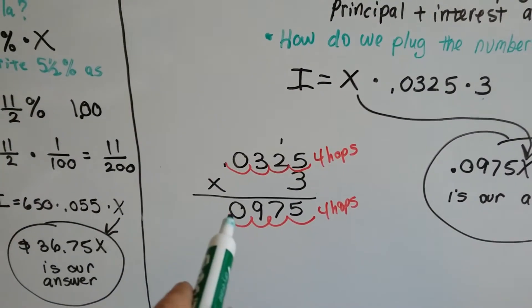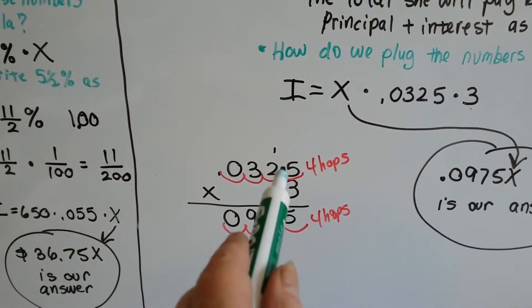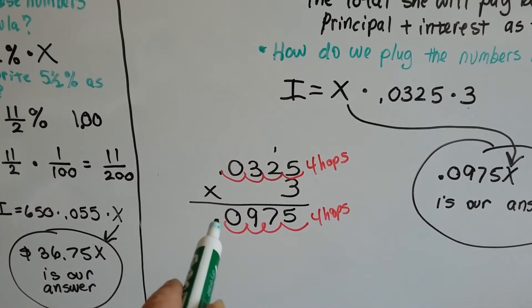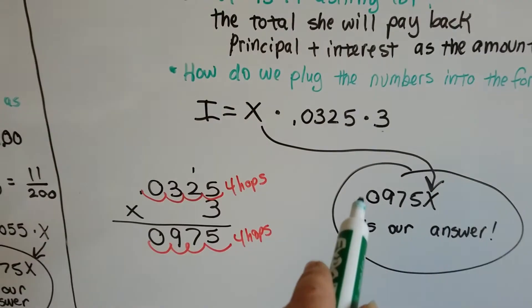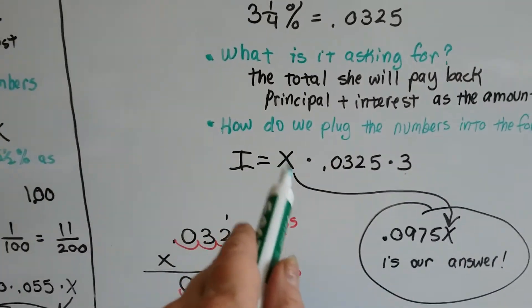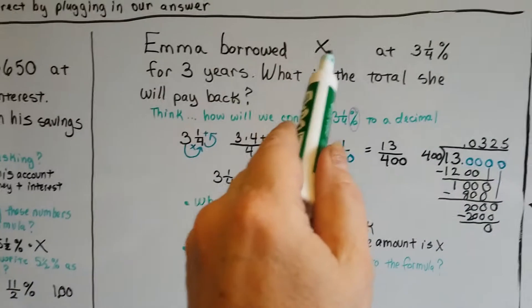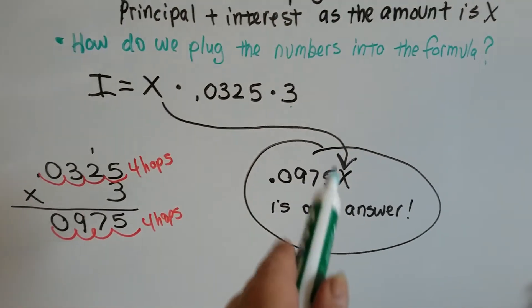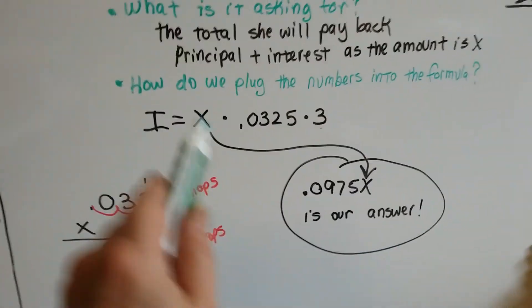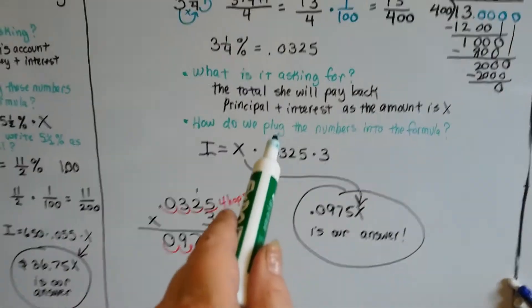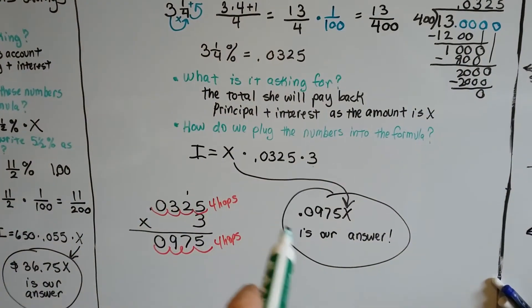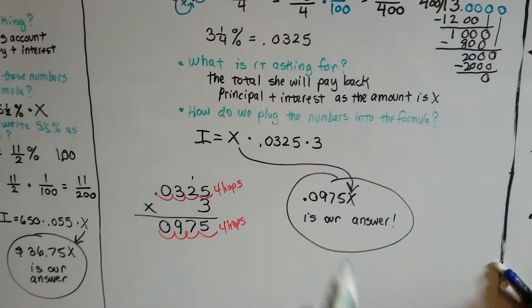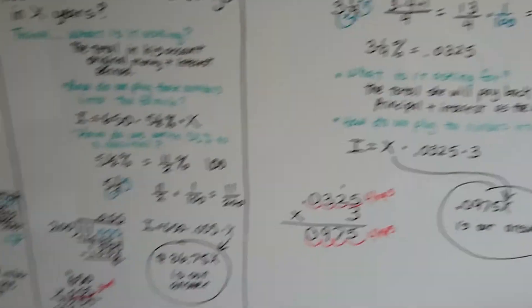.0325 times 3 comes out to .0975. We count 1, 2, 3, 4 hops in the equation. So there's 4 hops in the product. And we've got .0975. Now, we still need to multiply it by the principle. But that's x. So guess what? We're done. .0975x is our answer. Whatever the amount is, 3¼% for 3 years times whatever amount is going to be what this is. So we're finished. .0975x is our answer.